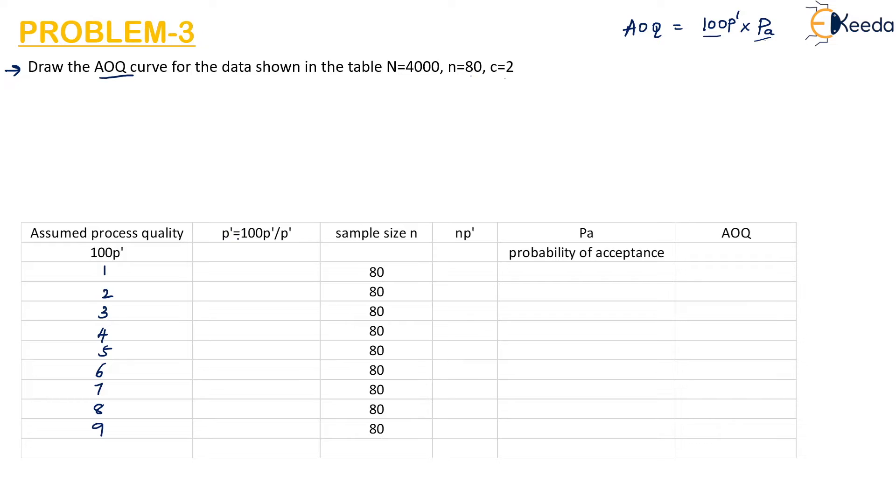P' is given as 100P' by 100. This is 100P' divide this number by 100 we will get 0.01, 0.02, 0.03, 0.04, 0.05, 0.06, 0.07, 0.08 and 0.09.